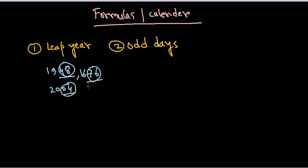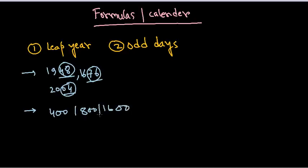Another concept is that if a whole year is completely divisible by 4, it is also calculated as a leap year. For example, the year 400 is completely divisible by 4, so it's a leap year; year 800 is a leap year; 1600 is a leap year, and so on. Other years whose last two digits are not divisible by 4 are definitely not leap years — like 2001 and 2002 are not leap years.